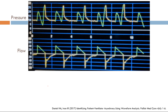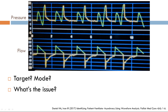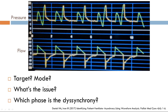Here you have a pressure and flow scalar. A few questions: What is your target variable and mode of ventilation? What is the issue, and which phase is it — trigger, target, or cycle dyssynchrony? What is your differential diagnosis and how do you fix it? Pause the video now.